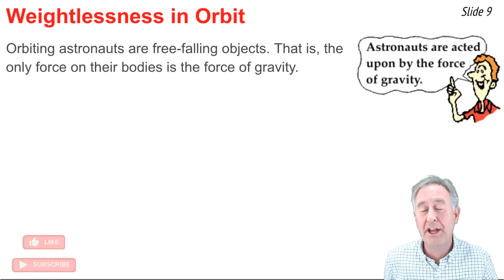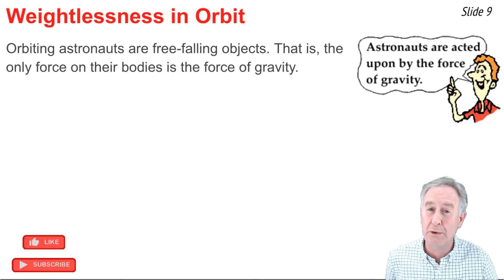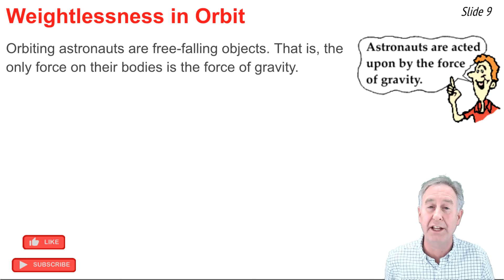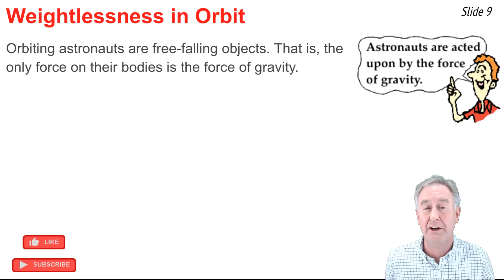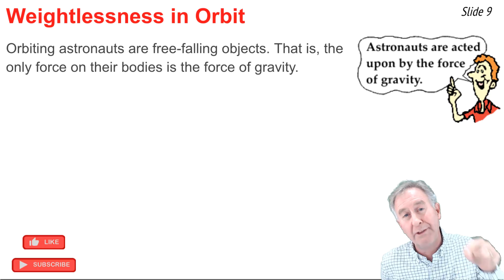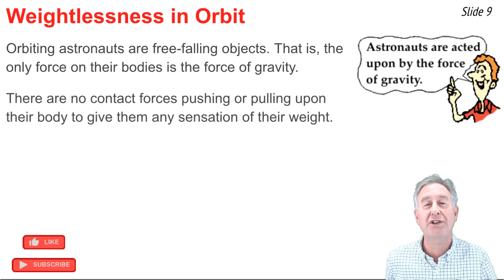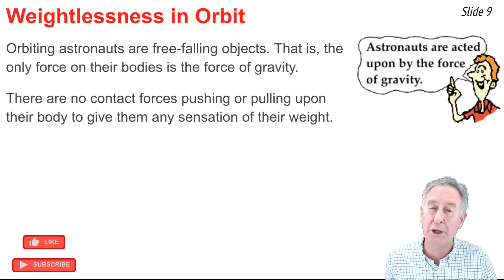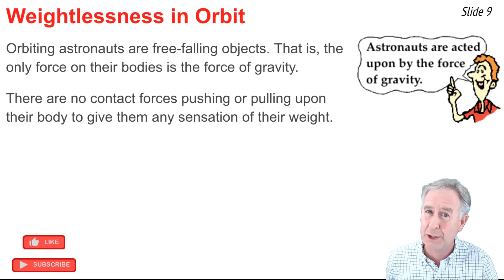Orbiting astronauts on the International Space Station are free-falling objects. That is, the only force acting upon their bodies is the force of gravity. They, and the space station that they are on, are free-falling around the Earth without free-falling into the Earth. Since there are zero contact forces pushing or pulling upon their body, their sense of how much they weigh is zero. That's why they feel weightless.